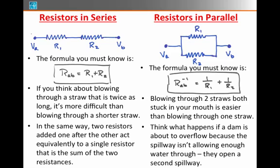If you think about what happens to a dam it's about to overflow because the spillway isn't allowing enough water to pass through, what typically happens is a second spillway is opened up in the dam to allow more water to come out. That's because for the same pressure behind the dam you can get twice as much current flow or water flow if you have twice as many openings.